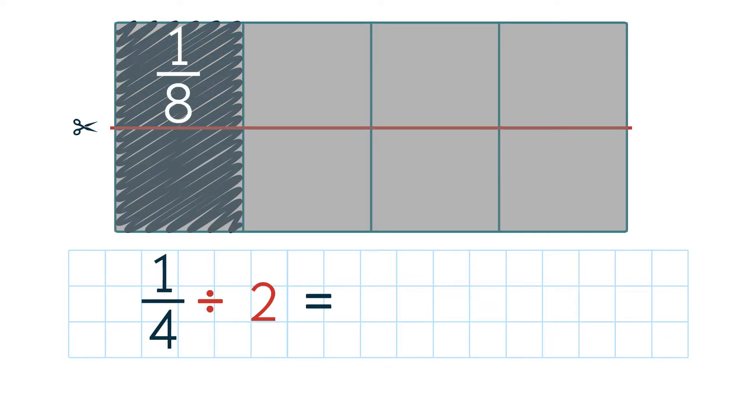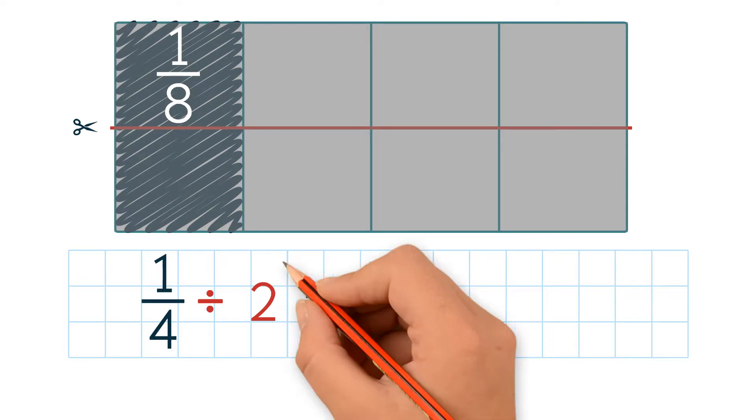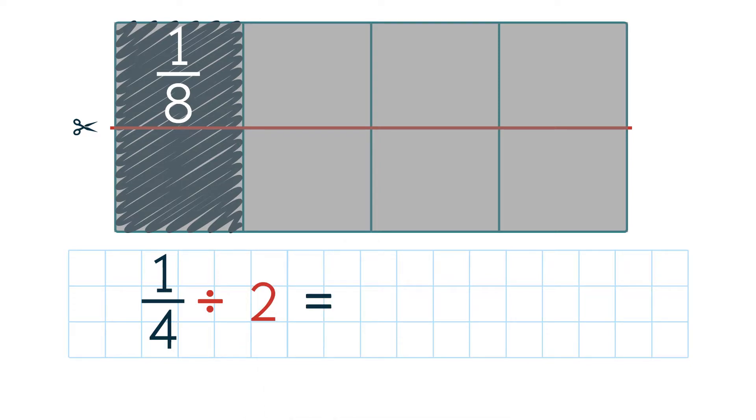We could also solve this division problem by writing a related multiplication sentence. First, we start by changing the whole number to a fraction. 2 is the same as 2 over 1.